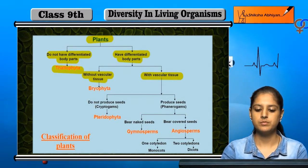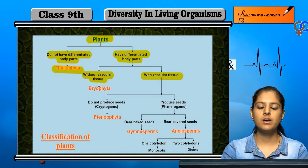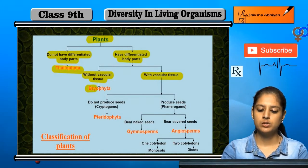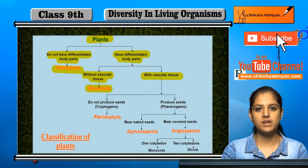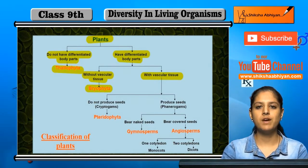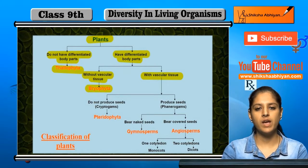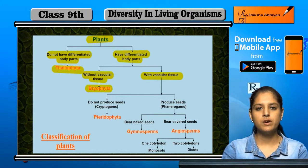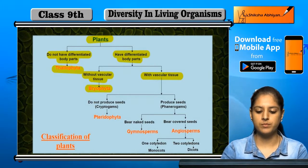If they don't have vascular tissue, they are called Bryophyta. If they do have vascular tissue, they are called Tracheophytes.